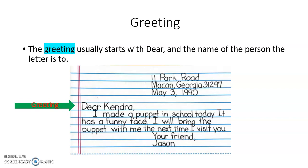The greeting is the second part of a friendly letter. The greeting usually starts with 'dear' and the name of the person the letter is to. If you look at the friendly letter on your screen, this letter is written to Kendra. So the greeting says 'Dear Kendra,' — there should always be a comma after the name of the person you are writing to.